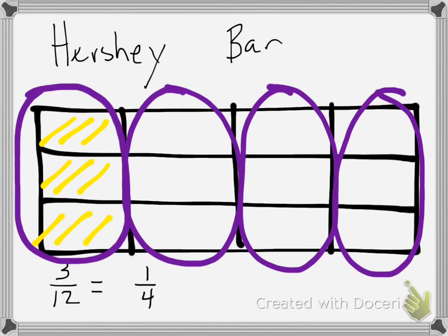And I can reduce the 3 twelfths by dividing the top and the bottom by the same number. And that would be 3. 3 divided by 3 is 1. And 12 divided by 3 is 4, showing me that 3 twelfths and 1 fourth are equivalent, and 1 fourth is the simplest form.